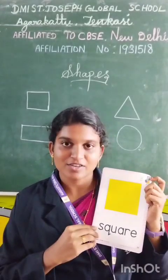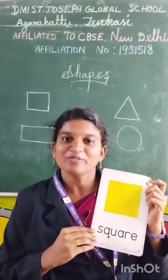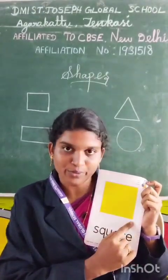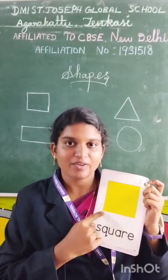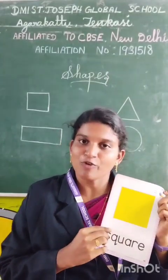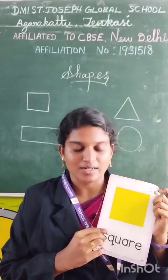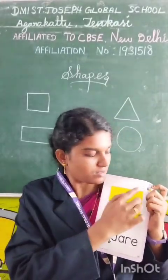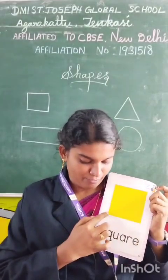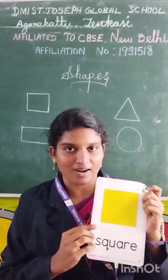Square has four sides. How many sides? Four sides. One, two, three, four. Square has four sides. And it has four corners. One, two, three, four. Square has four sides and four corners.